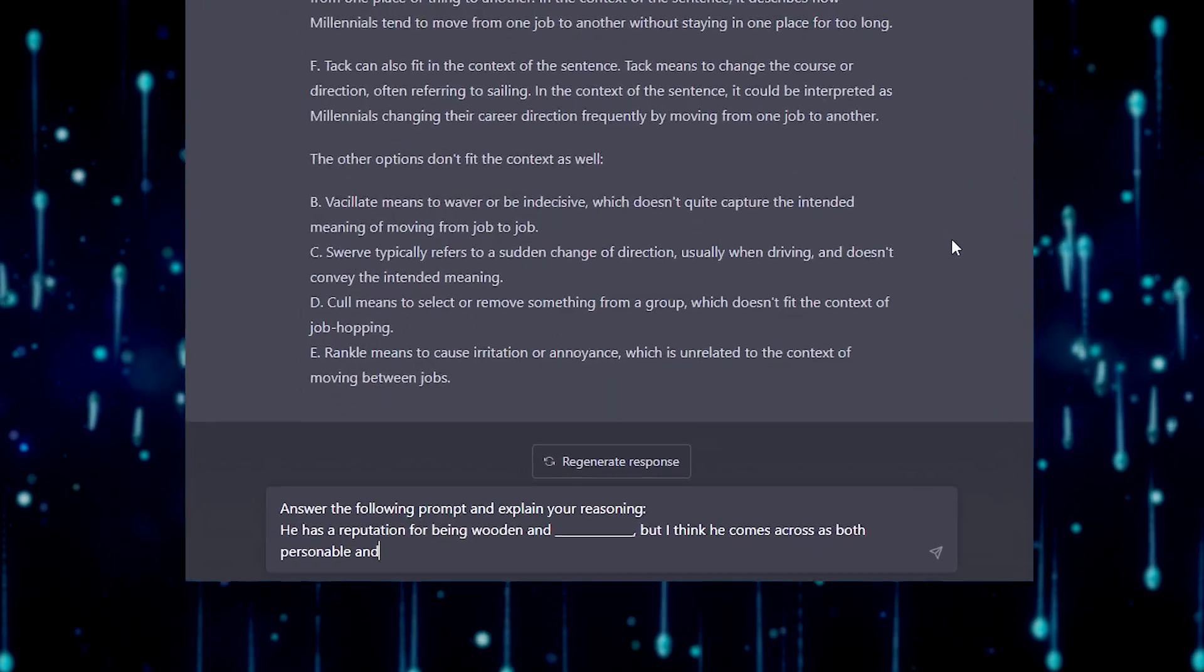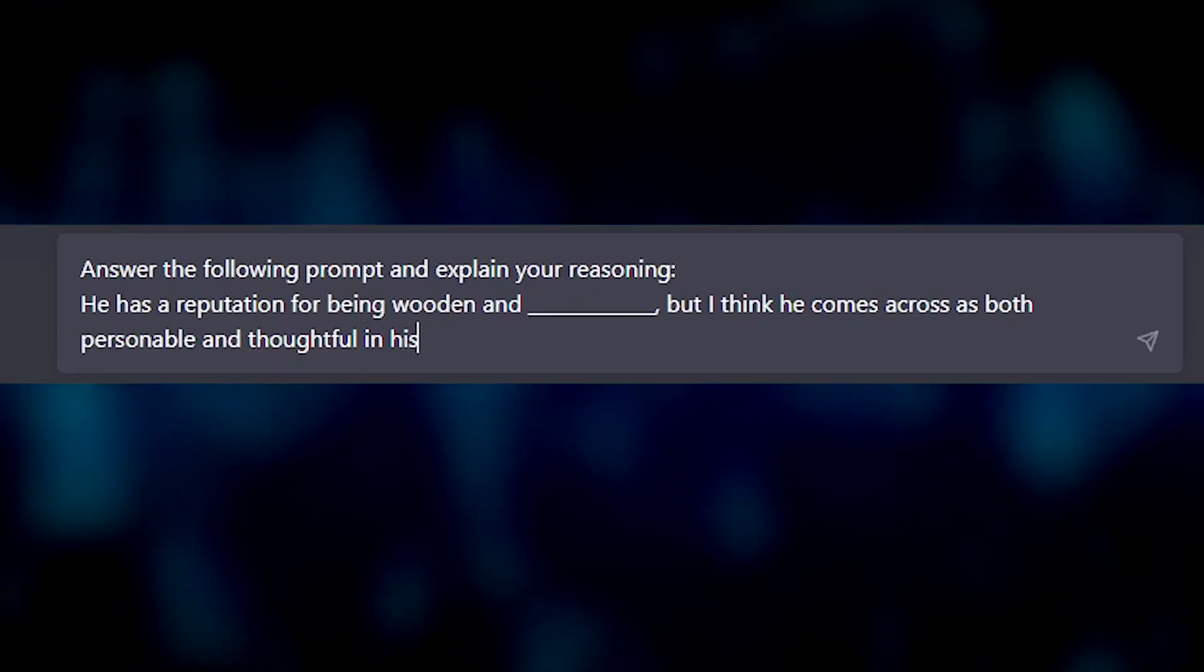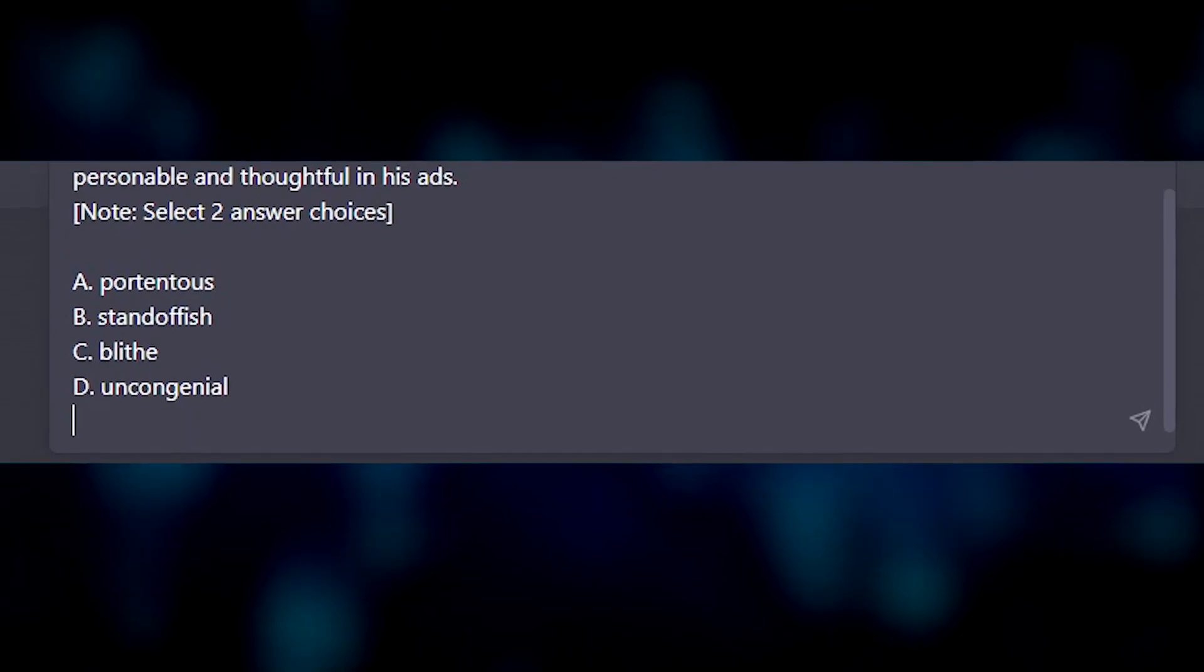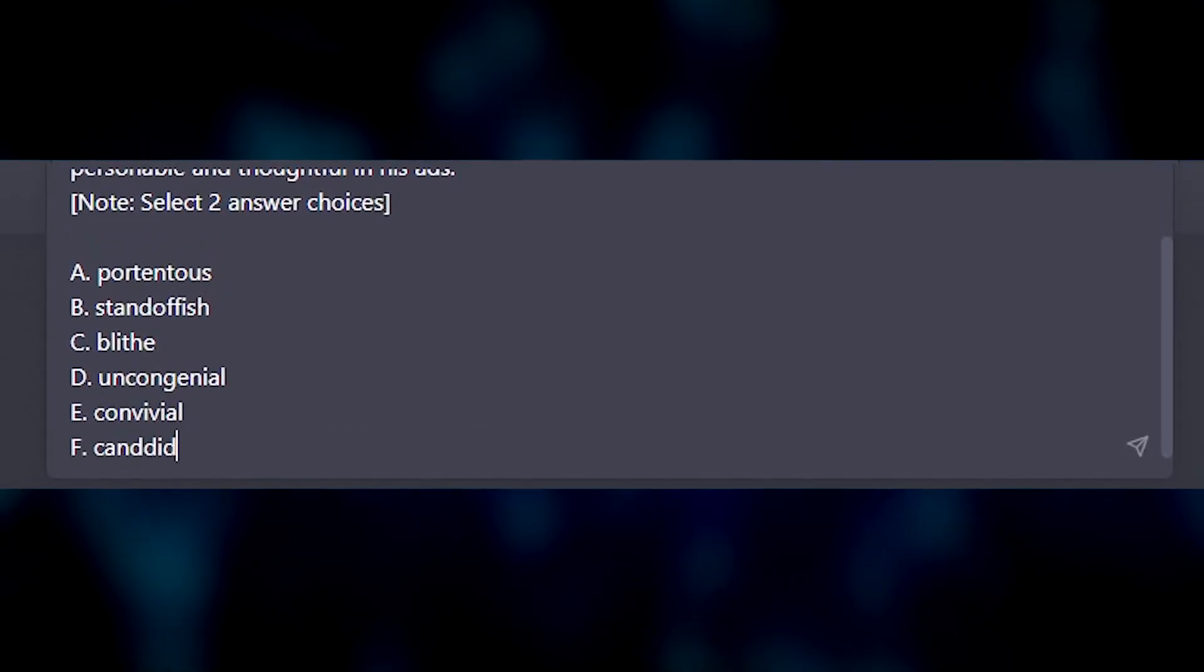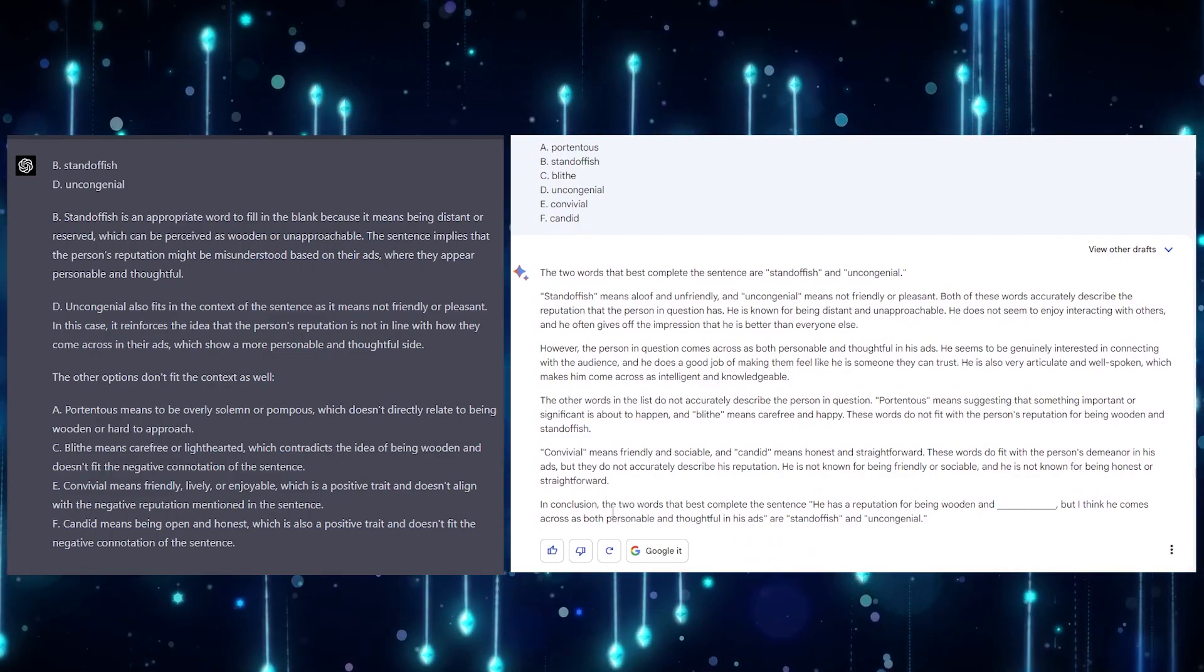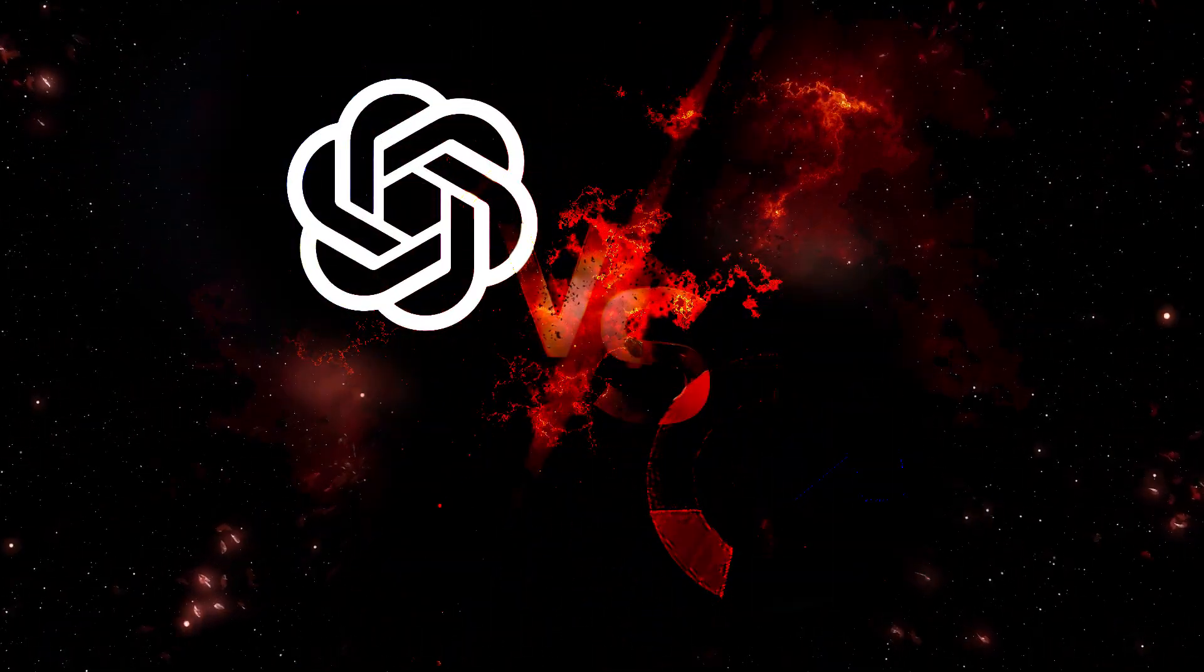Question two. Answer the following prompt and explain your reasoning. He has a reputation for being wooden and blank, but I think he comes across as both personable and thoughtful in his ads. And again, we can select two answer choices. Both GPT-4 and Bard come up with the same answer, B and D, which are both correct. Still, our score is 1.5 to 1.5. Hopefully, we can get another tiebreaker here soon.